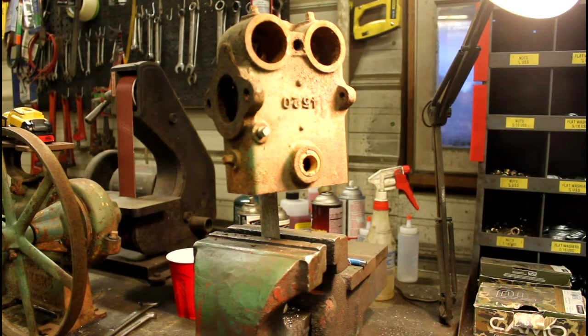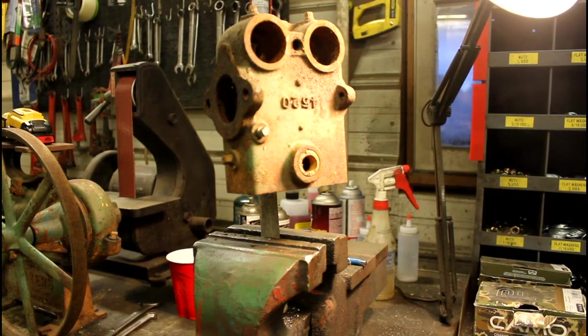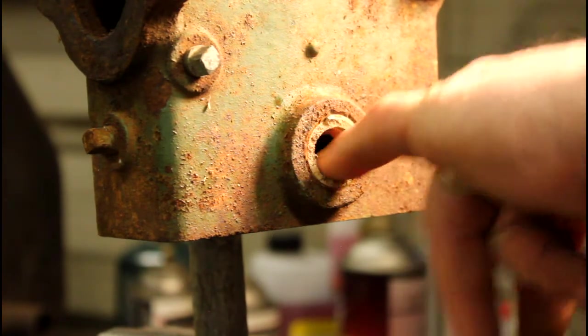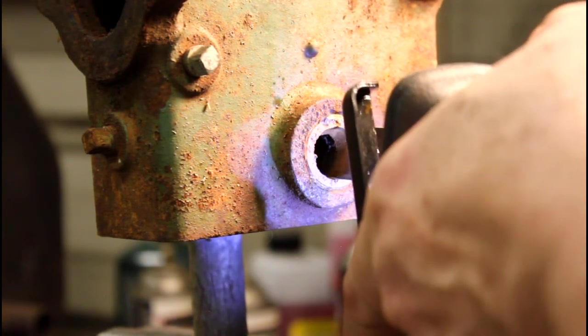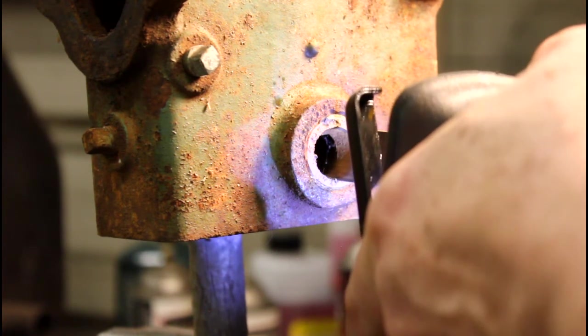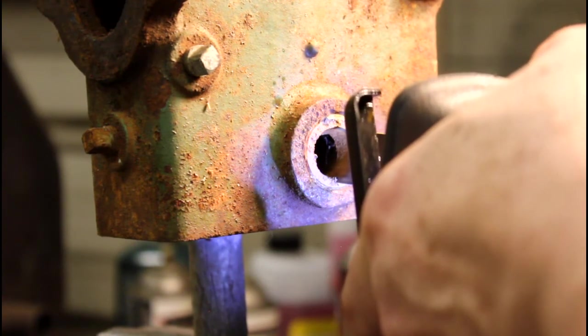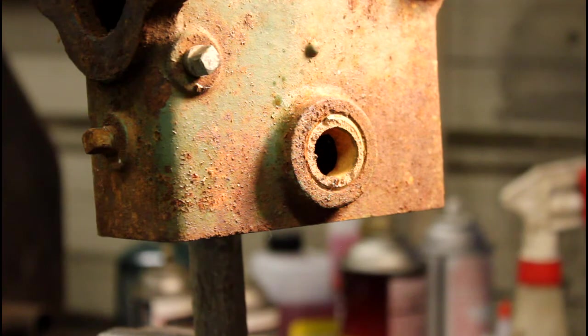Okay, here we are. I got the end of the pump clamped in the vise. It's upside down right now. And we're going to try to get that brass fitting out of there. See how we make out. Now first, I'm going to have to slice it.